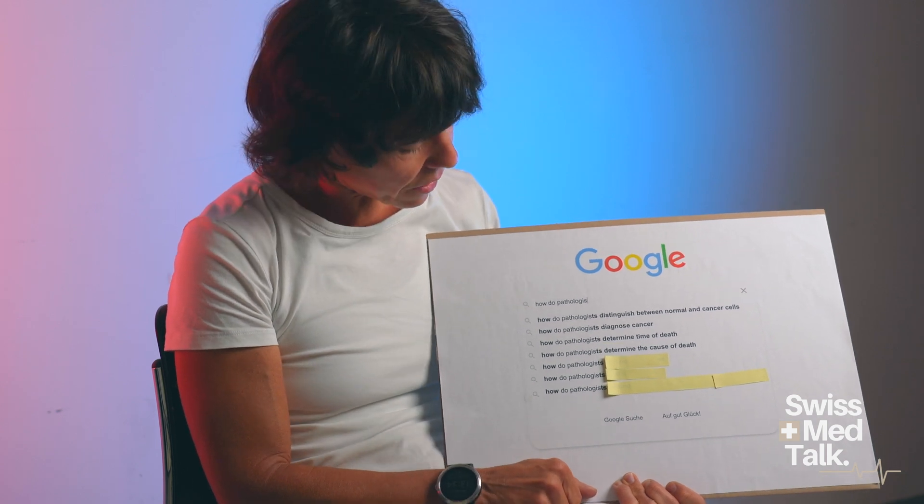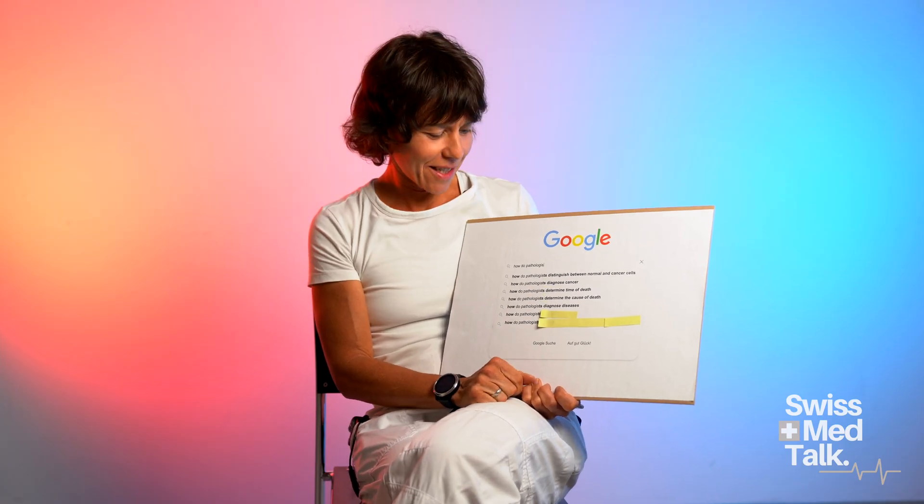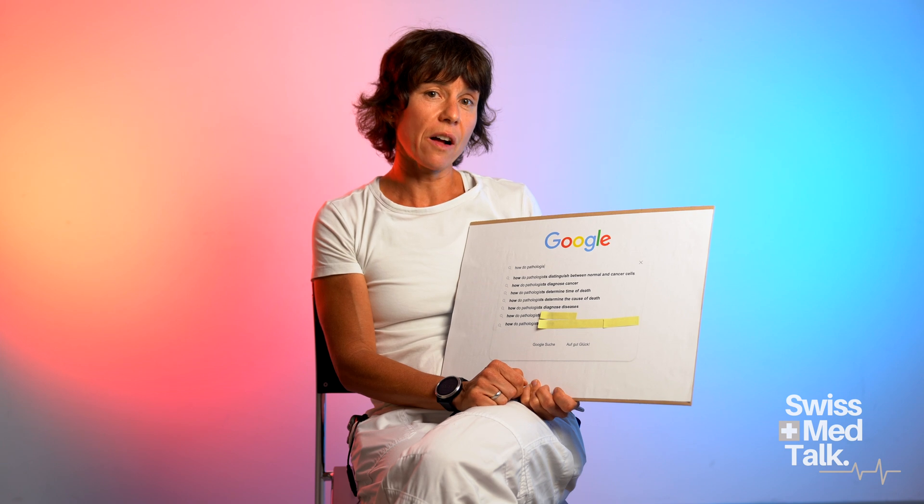Next question: how do pathologists diagnose diseases? That's a difficult question, actually. It would seem obvious, because that's what we do all day — we diagnose disease. It depends on the type of disease. Our primary tool is still the microscope. We take tissue sections, or biopsies, or cytological specimens, and look at them under the microscope. That might be enough, depending on how far the alterations are from normal, or whether they're subtle — then we need additional immunohistochemical stains, molecular testing, and sometimes we need help from other colleagues.